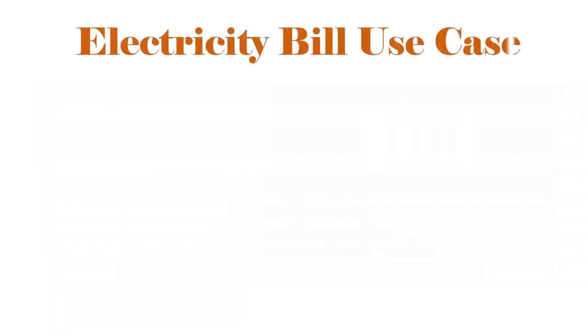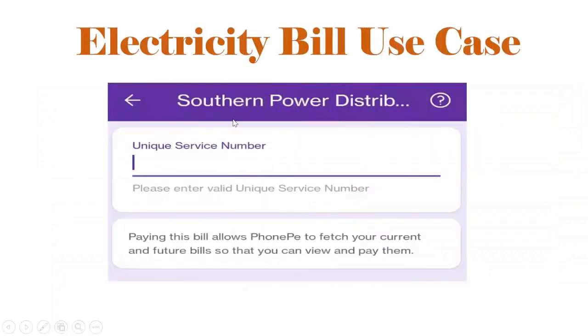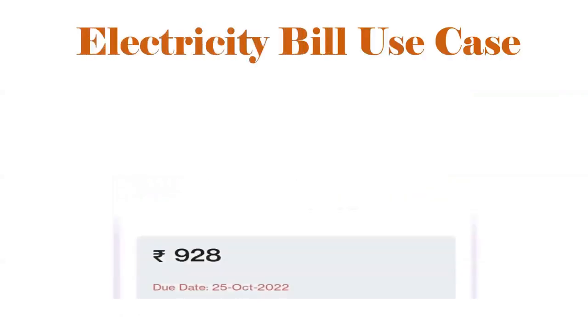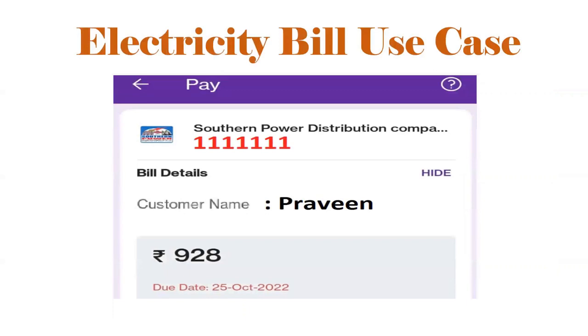If you see the requirement — so if you open PhonePay and you want to pay the electricity bill, we need to enter USN, that is Unique Service Number. When you give the USN number, we need to get the customer name, what is the bill amount, and what is the due date.